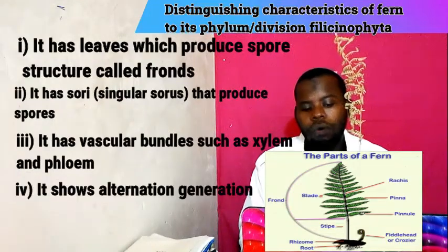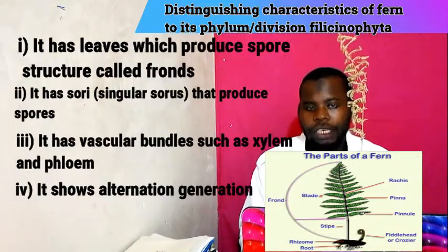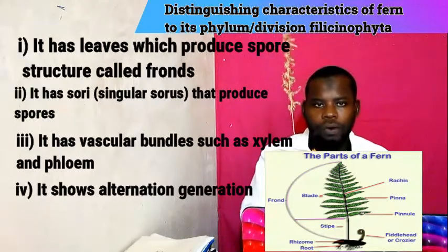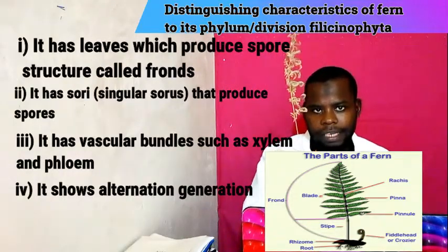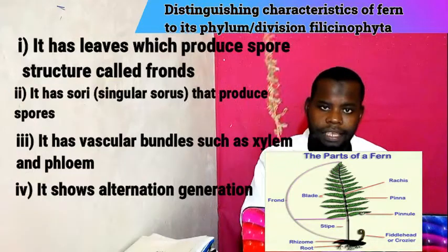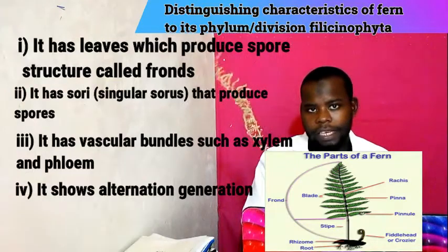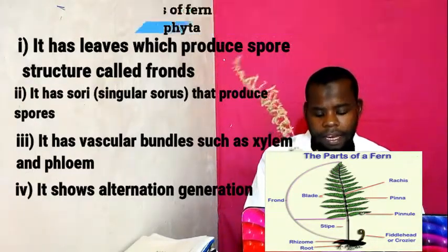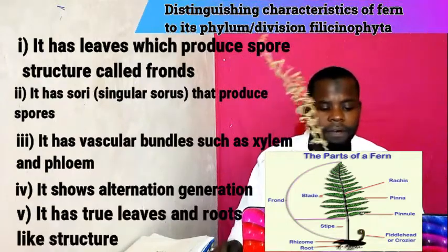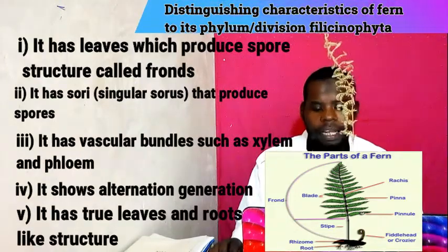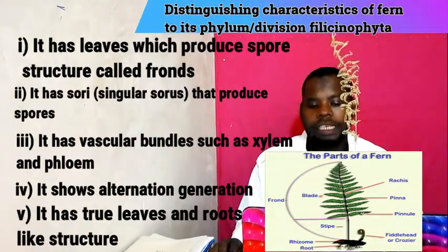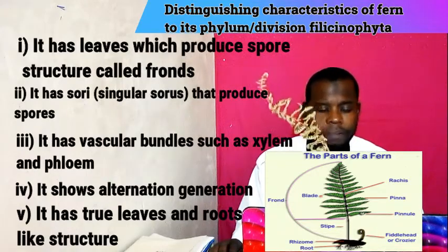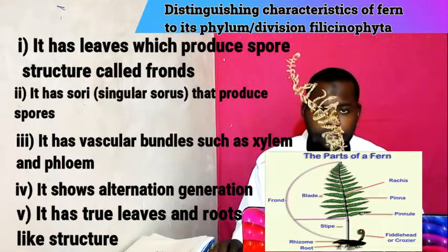Number four: it shows alternation of generations. It means it reproduces by both asexual and sexual reproduction — those are alternating. And it has true leaves and a root-like structure. That is the reason why it belongs to Filicnophyta.